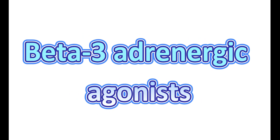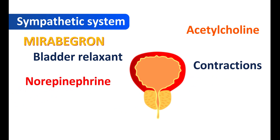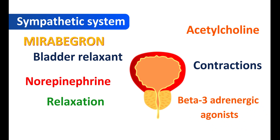The second group of drugs are the beta-3 adrenergic agonists. Mirabegron is a bladder relaxant that acts in a different way. The sympathetic system can also control bladder contraction, acting in quite the opposite way to the parasympathetic system — acetylcholine increases bladder contractions, whereas norepinephrine causes bladder relaxation. Therefore, in people with overactive bladder and urinary incontinence, beta-3 adrenergic agonists can be used. Vibegron is a recently approved medication within this category.